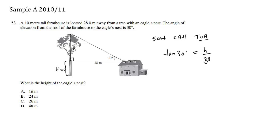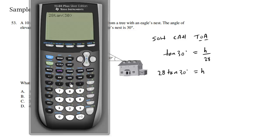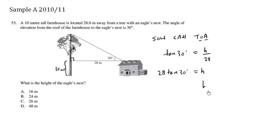So we can solve for h by multiplying 28 to both sides. So h equals 28 tan 30 degrees. Making sure that we're in degree mode on your calculator, 28 tan 30 is 16.166, approximately 16.166. So h is approximately 16.166.